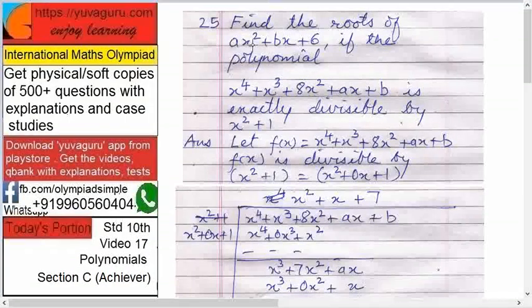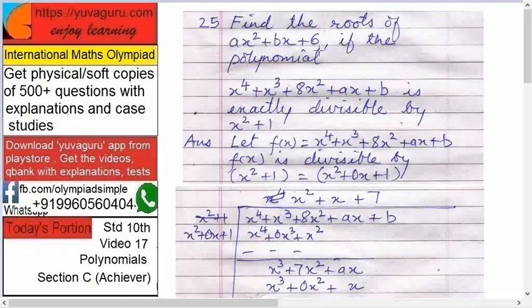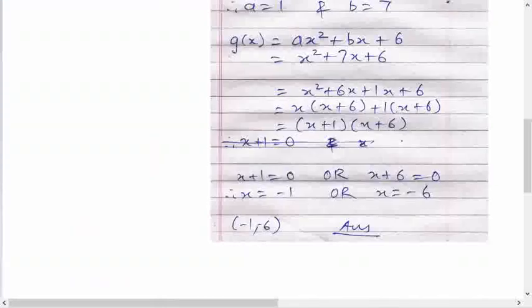We have to find the roots of this. Roots means we have to equate this to 0. So x into x plus 6 equals to 0. Therefore either, sorry not x minus 1, x plus 1. x plus 1 into x plus 6 equals to 0.